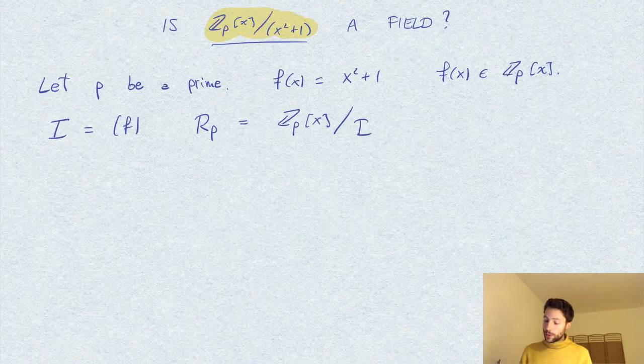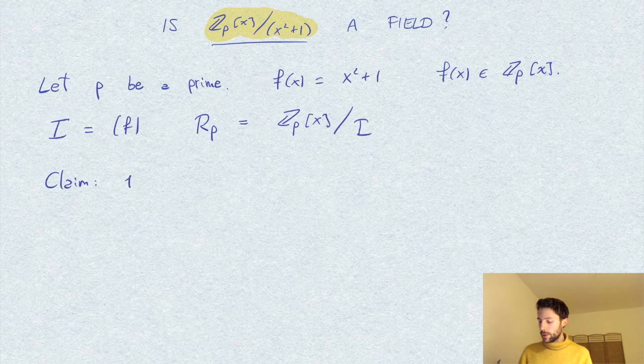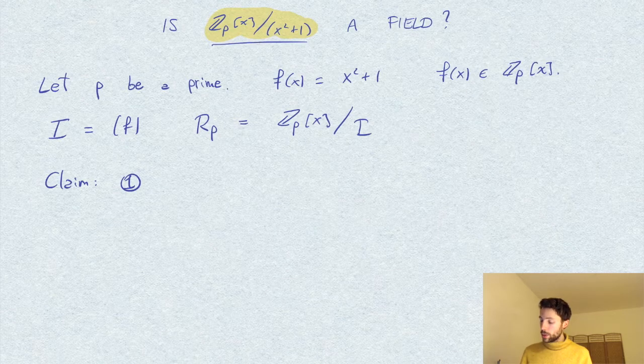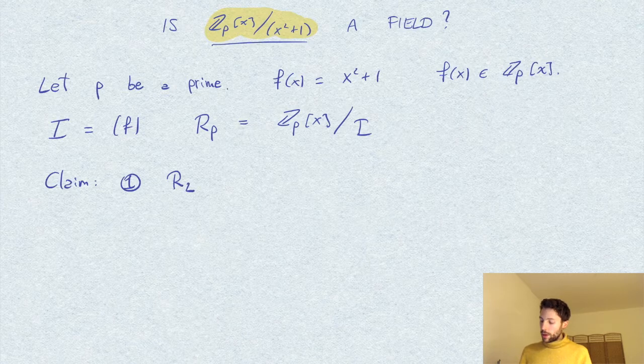So I want to prove two things in particular. I claim that first of all, what is R_2, so when p is equal to 2, this is not a field.